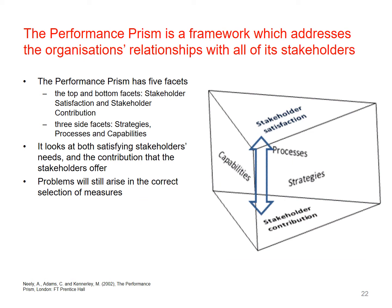The performance prism is a framework which addresses the organisation's relationship with all of its stakeholders. It has five facets: the top and bottom facets are stakeholder satisfaction and stakeholder contribution — showing that stakeholders contribute to the firm and that links to their satisfaction. The three sides around the edge are your strategies, capabilities and processes. This looks at satisfying both stakeholders' needs and the contribution stakeholders offer. Problems will still arise in the correct selection of metrics, but this is a much better structure to consider.